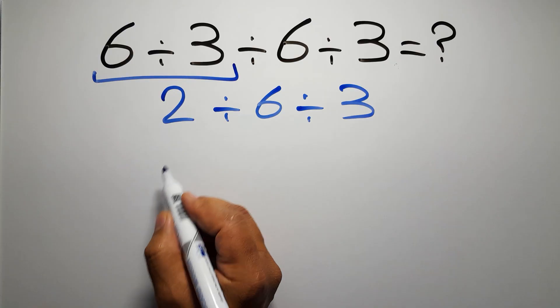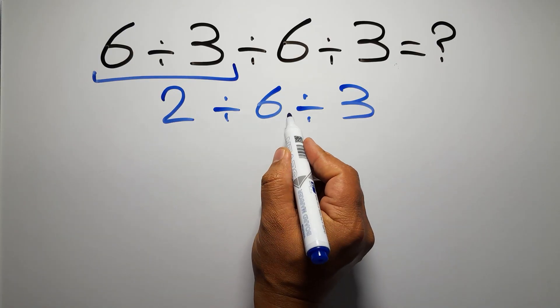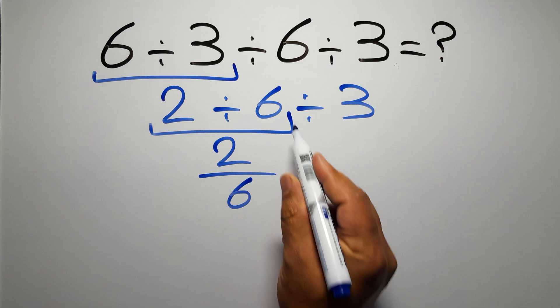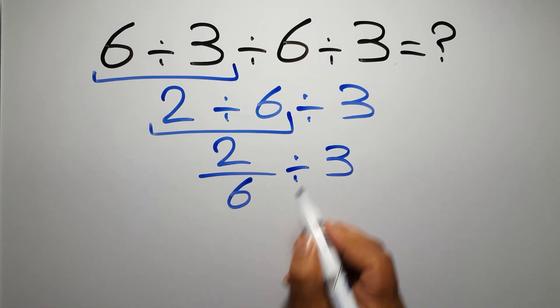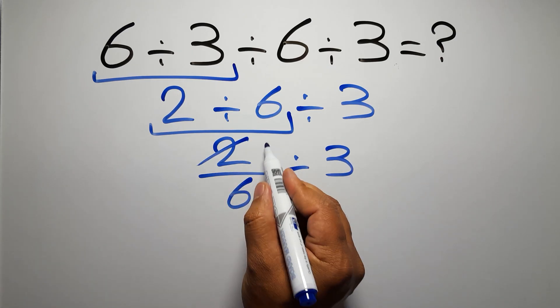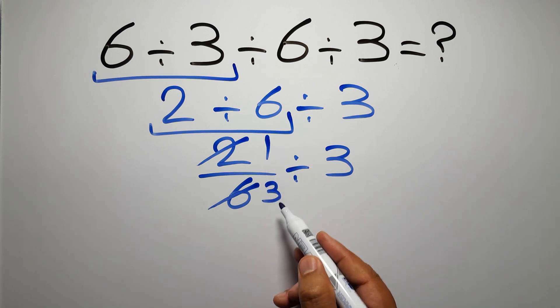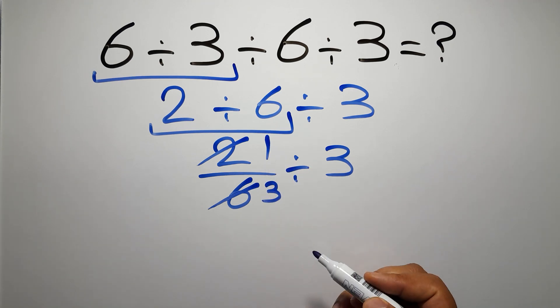Now we have to do this division, 2 divided by 6. We can write 2 over 6, then divide it by 3. 2 divided by 2 is just 1, and 6 divided by 2 equals 3, so we have 1 over 3 divided by 3.